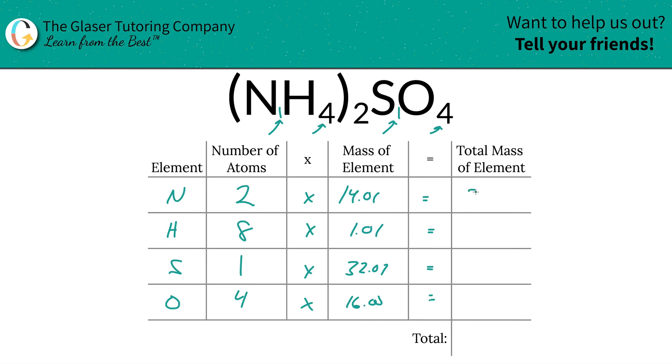14.01 times 2 is 28.02, and this works out to be 8.08. This works out to be 32.07, and this works out to be 64.